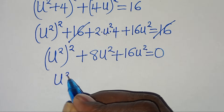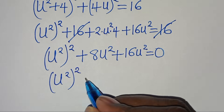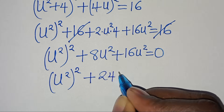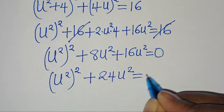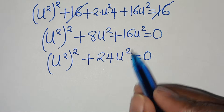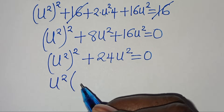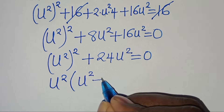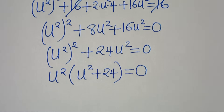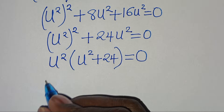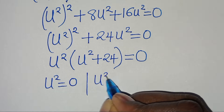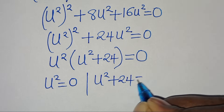So we have u⁴ + 24u² equals 0. Since u² is common, we can factor out u², giving u²(u² + 24) equals 0. From the first factor, u² equals 0.